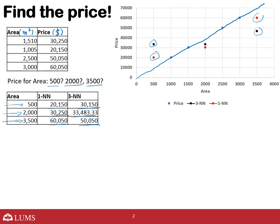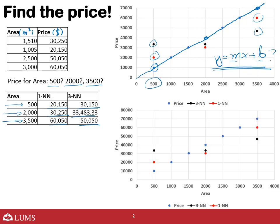Even in the interpolation case — 500 ke case mein, agar hamein yeh maloom hota ke hamare training data ek line mein aate hain, toh hum clearly jaante ke us ki price yahan honi chahiye. Similarly 2000 ke case mein woh point yahan, aur 3500 ke case mein woh point yahan kahi hona chahiye. Hum ne itni machine learning is par laga di jabke yeh ek seedhi line thi jis mein ek formula — y = mx + b — would have completely given us the correct answer. The big question is: how do we find the values of m and b?